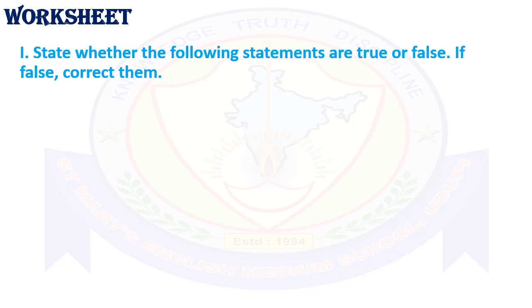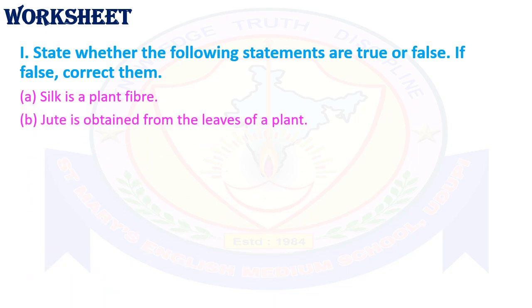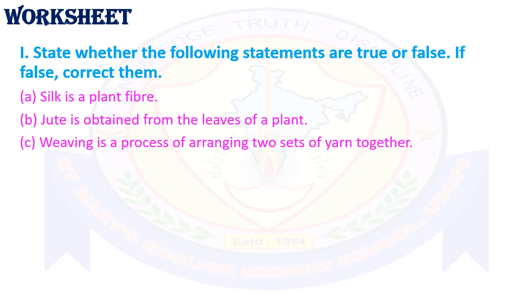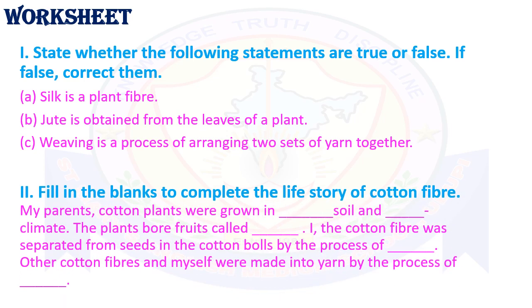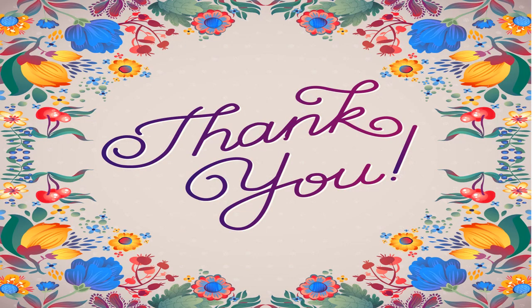I hope you all understood the lesson. Here is a worksheet about this lesson. First question: state whether the following statements are true or false, and if false, correct them. One: silk is a plant fiber. Two: jute is obtained from the leaves of a plant. Three: weaving is a process of arranging two sets of yarn together. Question 2: fill in the blanks to complete the life story of cotton fiber. My parents' cotton plants were grown in blank soil and blank climate. The plants bore fruits called blank. I, the cotton fiber, was separated from seeds in the cotton balls by the process of blank. Other cotton fibers and I were made into yarn by the process of blank. Thank you.